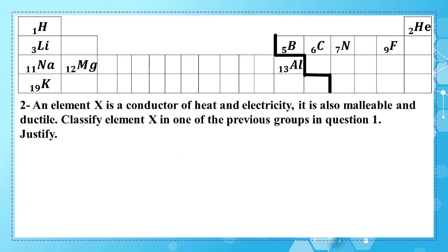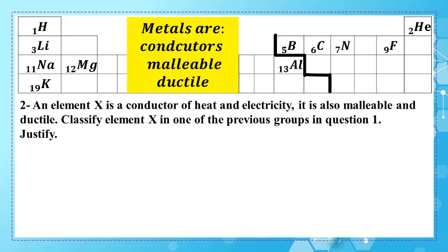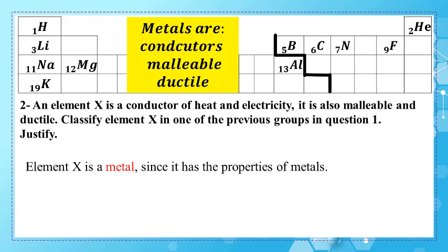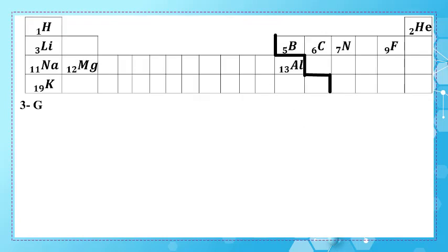In point two, an element X is a conductor of heat and electricity; it is also malleable and ductile. Classify element X in one of the previous groups from question one and justify. We know that metals are conductors, malleable, and ductile, so element X is a metal since it has the properties of metals.